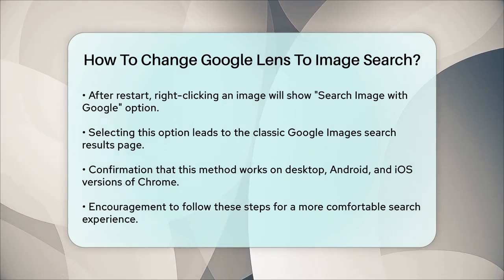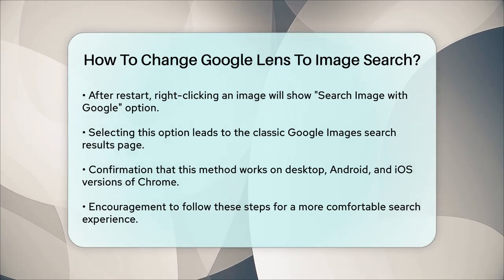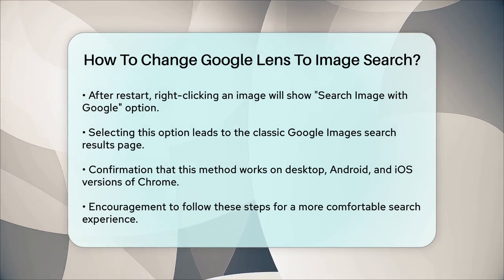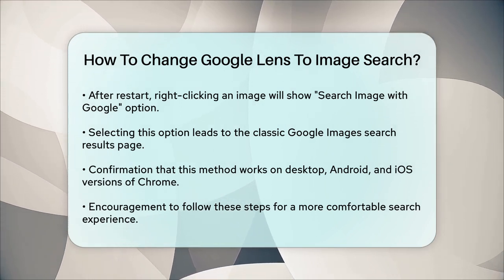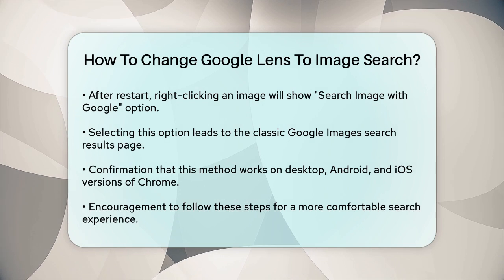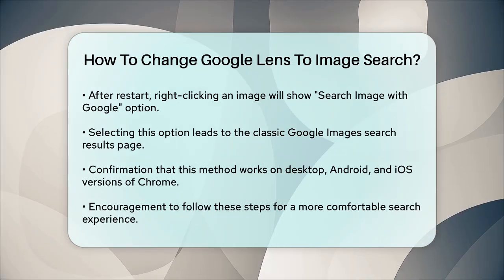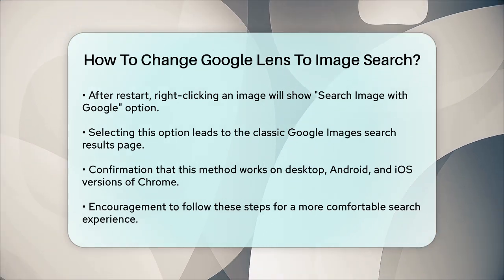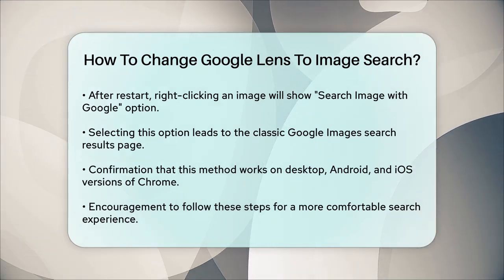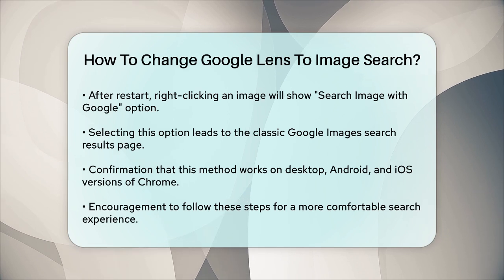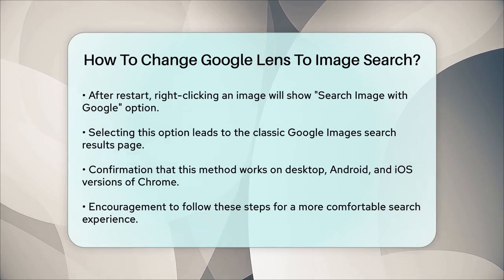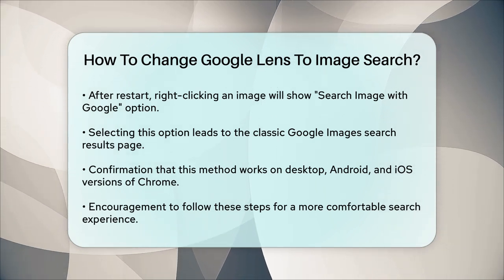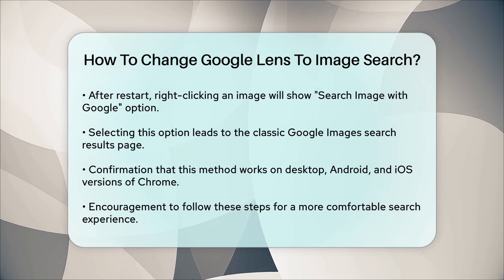This method works on desktop, Android, and iOS versions of Chrome, so you can make this change regardless of the device you're using. By following these simple steps, you can easily switch back to the classic image search feature that you might be more comfortable with. This way, you can continue to use the search method that works best for you.